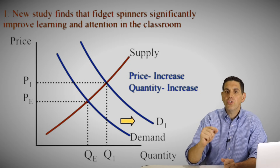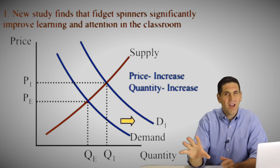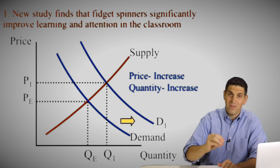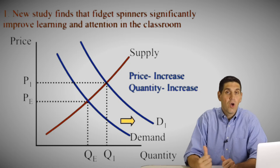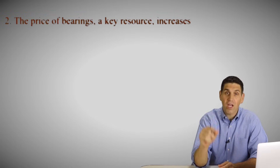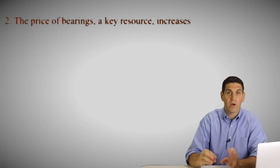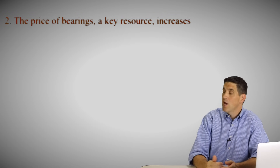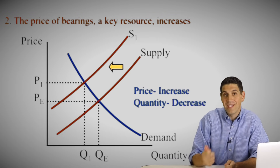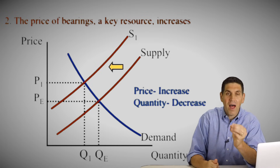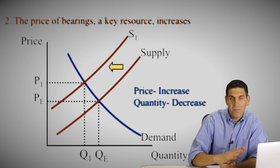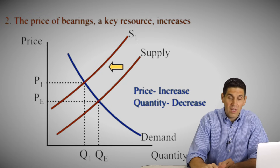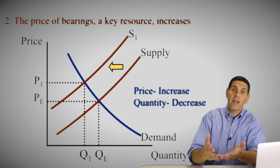Scenario two is a supply shift. The bearings — the key resource for producing fidget spinners — are now more expensive. If they're more expensive, you cannot produce as many fidget spinners, so the supply curve shifts to the left, causing the price to go up and the quantity to decrease. Keep in mind: a decrease in supply is always to the left — don't shift it down. That's the classic mistake. Increase is always to the right for both demand and supply; a decrease is always to the left for both.